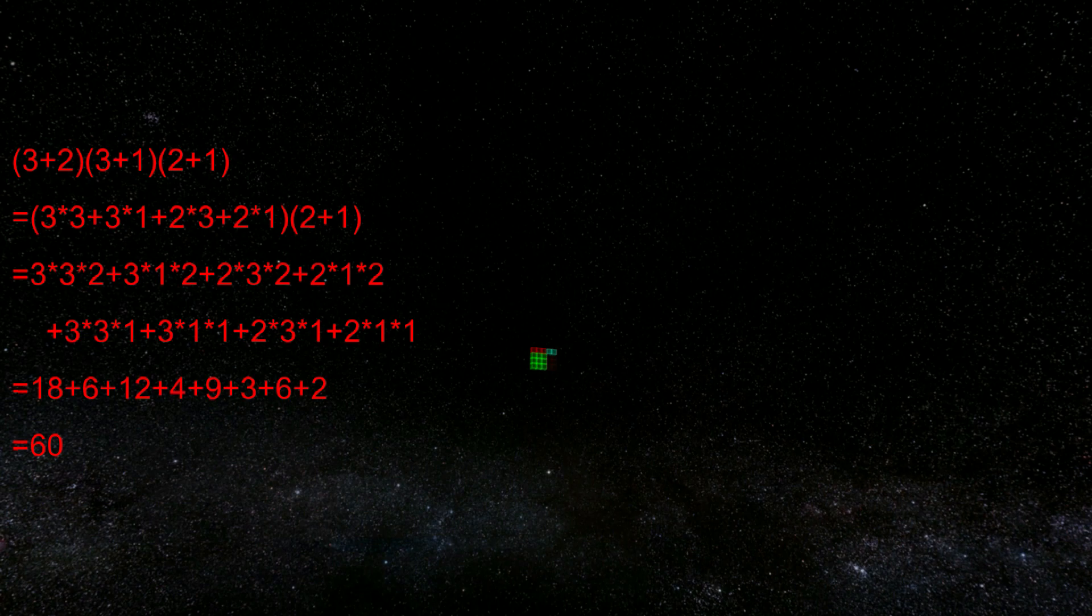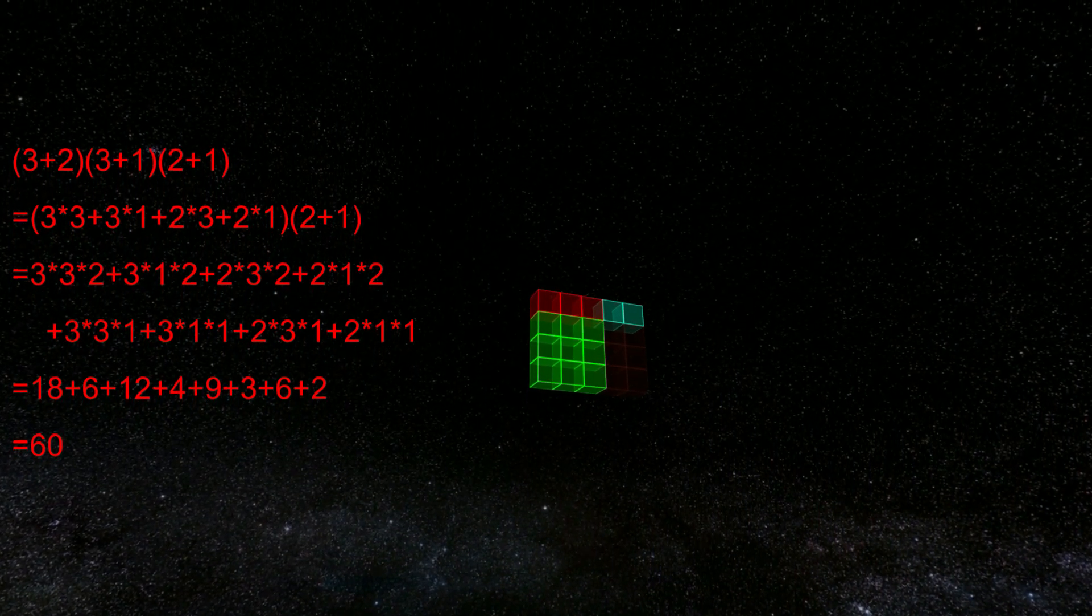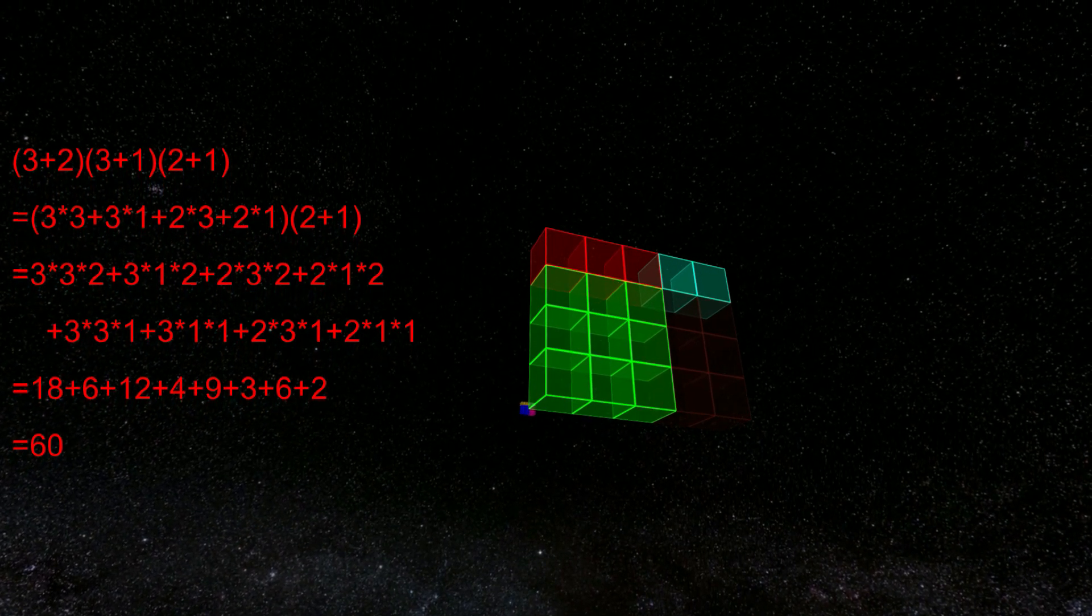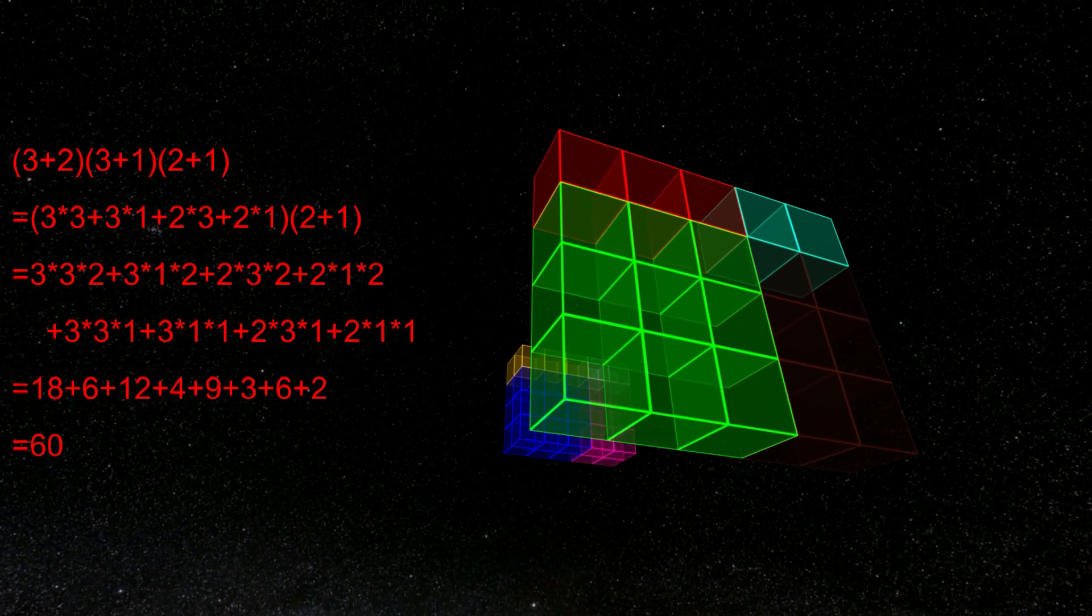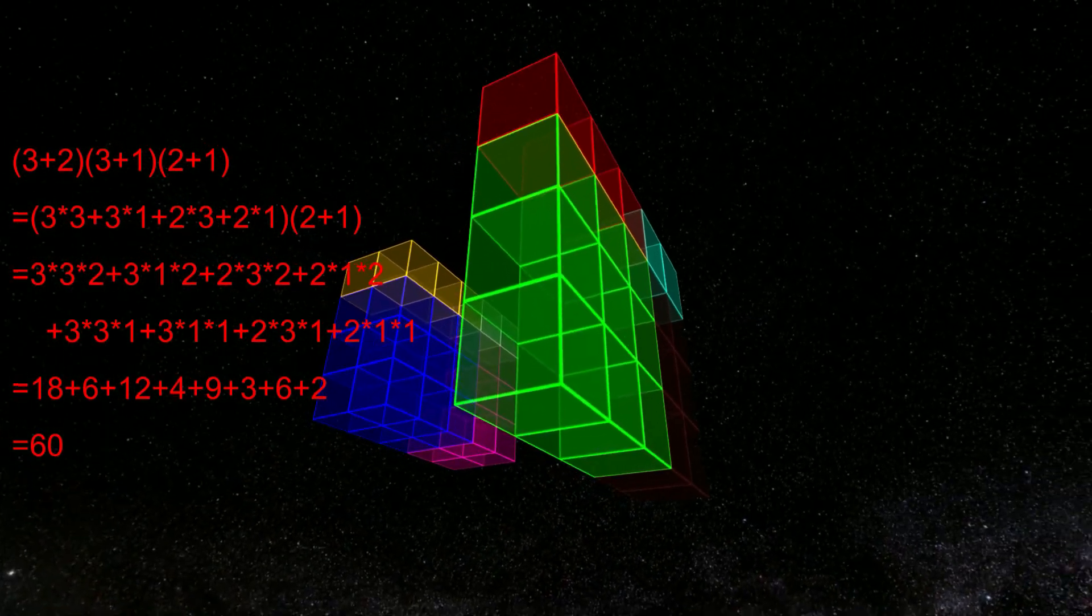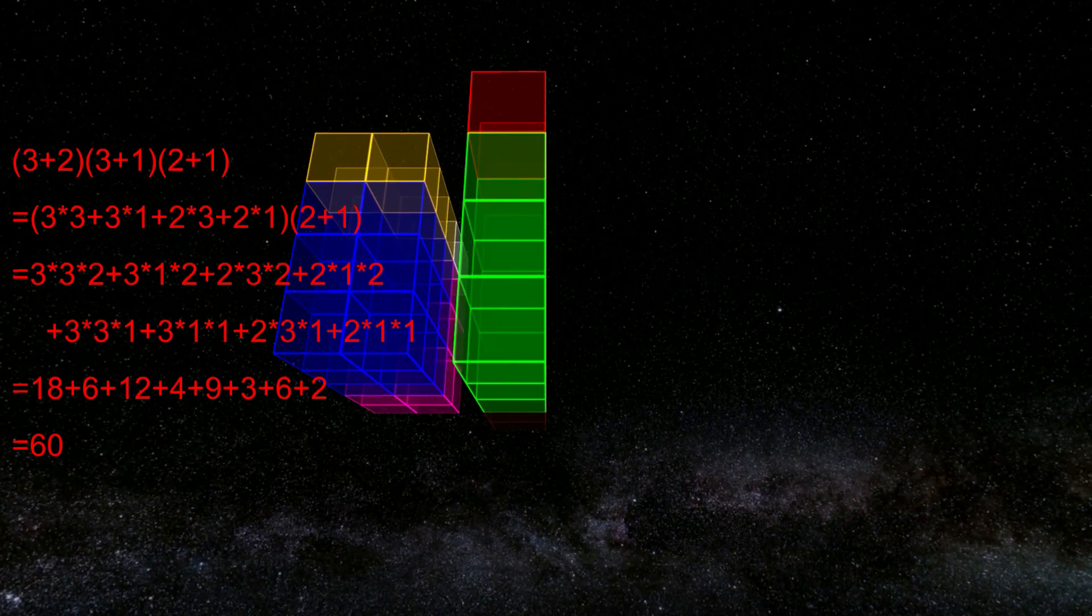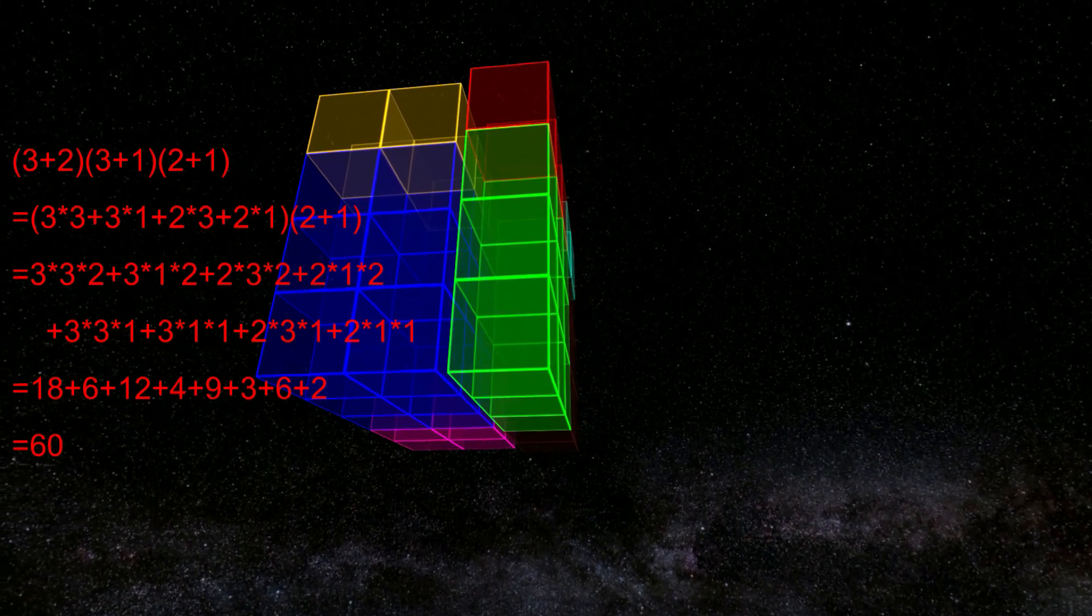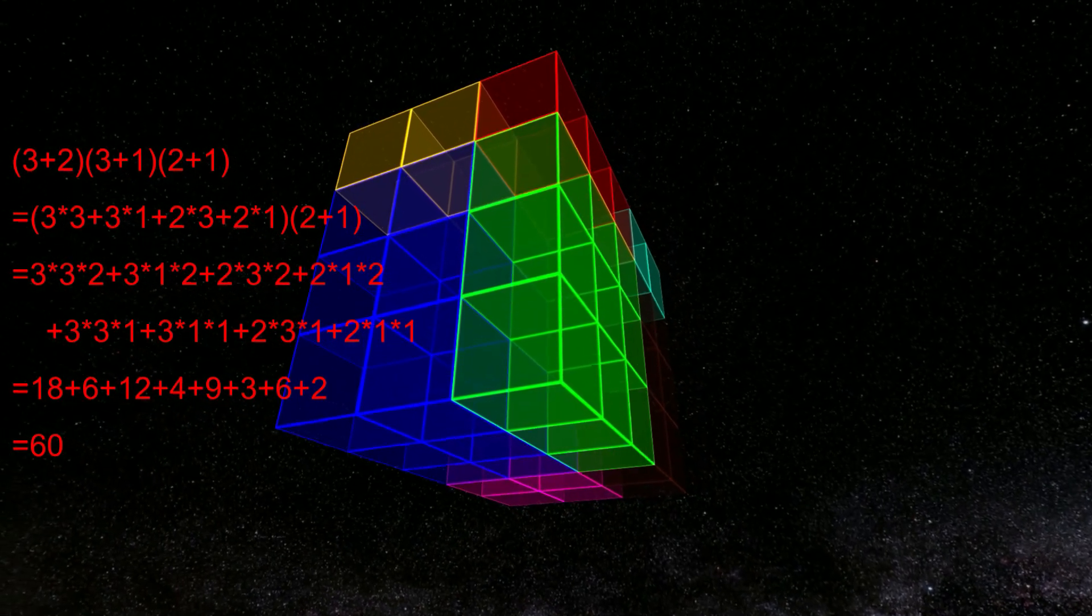Our distributive property can also be extended to three dimensions. We use 3 plus 2 in brackets, times 3 plus 1 in brackets as before, for the x and y axes, but add 2 plus 1 in brackets for the z-axis. Each of the four terms of the two-dimensional case is now multiplied by the two terms of the third dimension, leaving eight terms to be added up to get to 60. This corresponds to the eight parts into which the total volume is now split. It's not that easy to identify all eight of these parts in the cube in this model, but they are all there.